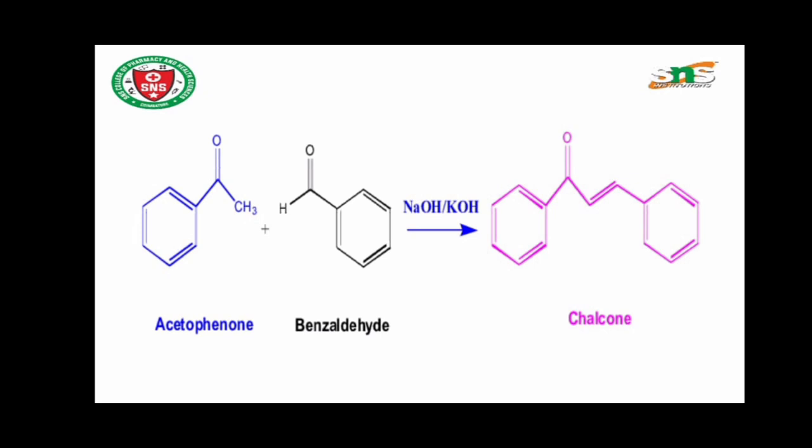In this slide, we see the reaction of acetophenone (C6H5-COCH3) with benzaldehyde (C6H5-CHO) in the presence of sodium hydroxide or potassium hydroxide. A water molecule is eliminated, giving the product C6H5-CO-CH=CH-C6H5, which is chalcone. So one molecule of acetophenone reacts with one molecule of benzaldehyde in the presence of NaOH or KOH to give chalcone.